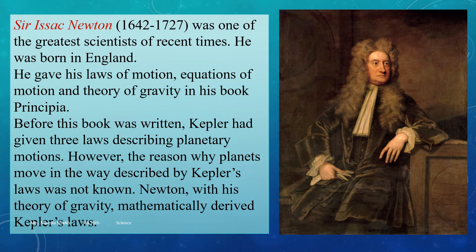However, the reason why planets move in the way described by Kepler's laws was not known. Kepler knew that something was happening and noted it and gave out certain laws, but he did not know the reason behind it. Newton, with the help of Kepler's laws, came up with the theory of gravity and mathematically derived Kepler's laws, proving that Kepler was right.